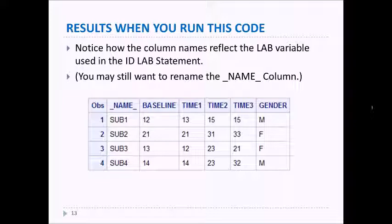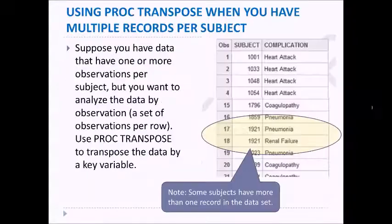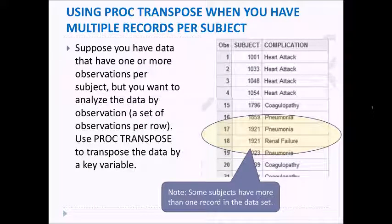We can also use PROC TRANSPOSE when we have multiple records per subject. Suppose we have a data set where one or more observations per subject are in the data set, but you want to analyze the data with only one subject per row. So what you want to do is combine any rows that contain one subject onto one line. We can do that using PROC TRANSPOSE.